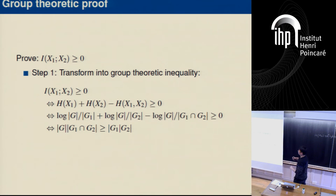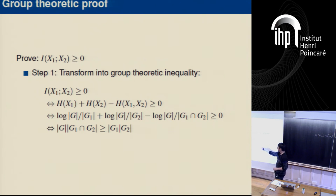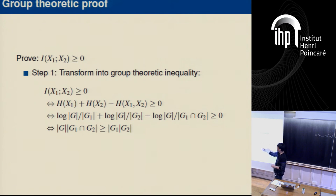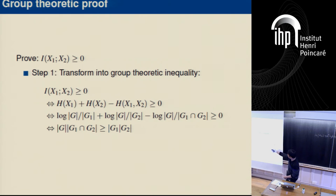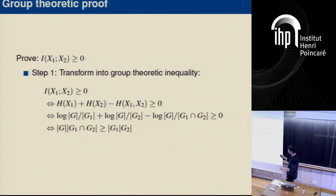As an example, let's prove mutual information is non-negative. Based on the equivalence, I(X;Y) ≥ 0 is true if and only if the corresponding group inequality holds. By our result, we can replace the entropy terms with the group-induced version, giving a group inequality involving only group sizes.